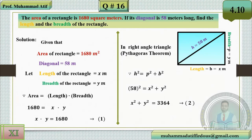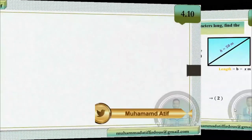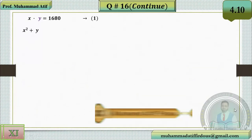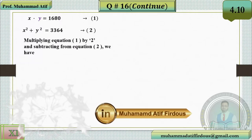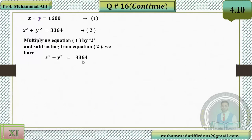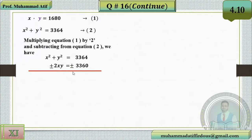Now solve equations one and two simultaneously, as we did in question 15. Multiply equation one by 2 and subtract from equation two. Equation two is x² + y² = 3364; two times equation one gives 2xy = 3360. Subtracting: x² − 2xy + y² = 4.